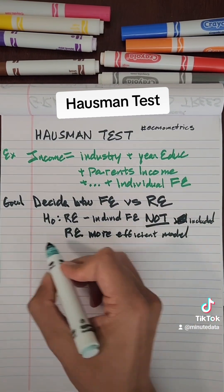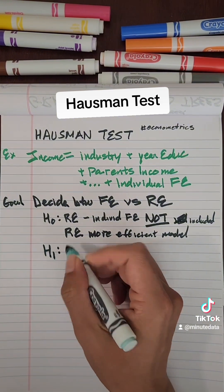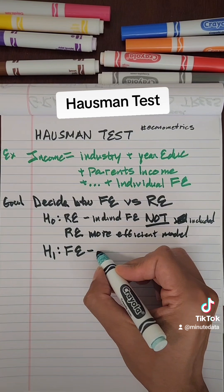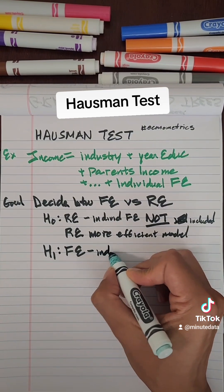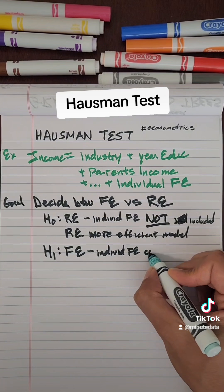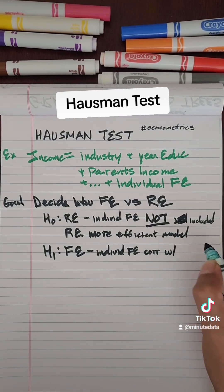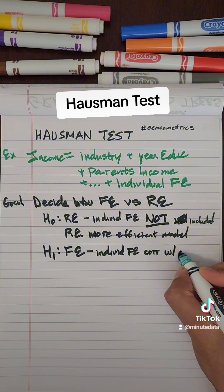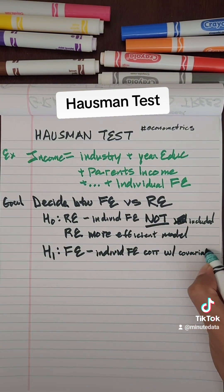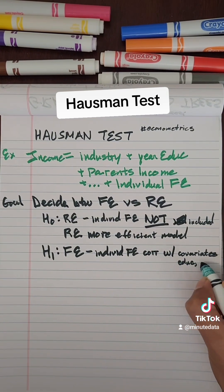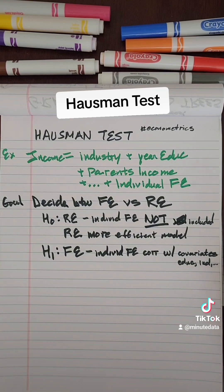If you reject the null hypothesis, the alternative hypothesis would be to include fixed effects, and largely that would mean the individual fixed effects are correlated with your other regressors — your other covariates — such as education, industry, etc.